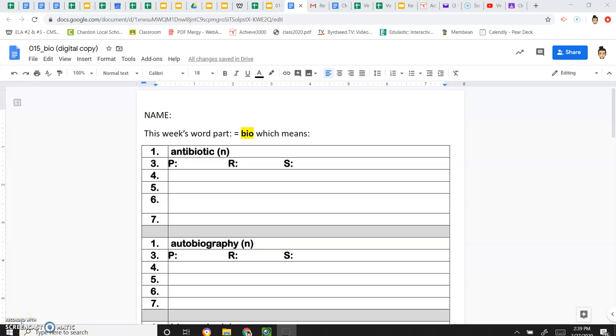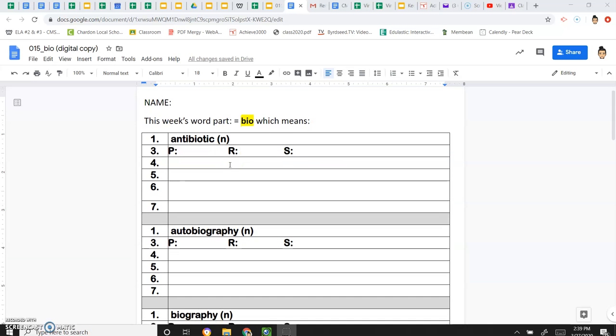We are on day three of our word part study for bio, which means life. We've talked about an antibiotic, which is a medicine that we use to kill a bacteria, which is trying to go against our life.